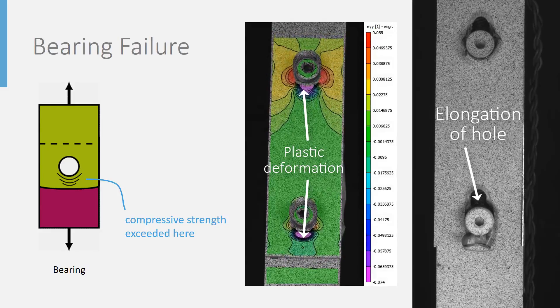Bearing failure is the least unstable of the failure modes and thus is often the preferred failure mode to have critical in a joint design. It should be noted, however, that this is not always possible.